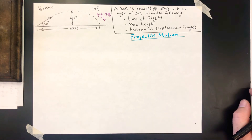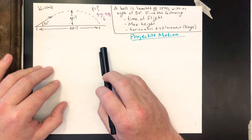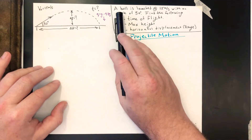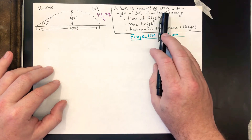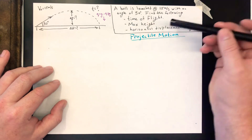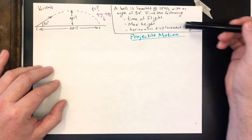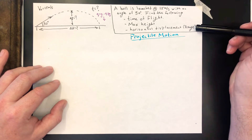Welcome. This is Mr. Morin and today we're going to make a video looking at projectile motion. There are lots of different examples of projectile motion, so today we're just going to look at an example where we're taking a ball launched at a certain initial velocity with a given angle, and we're going to try to find a few things out like the time of flight, the maximum height, and how far it went horizontally.